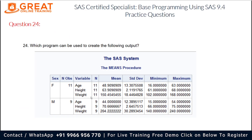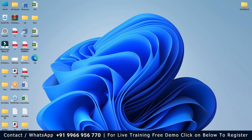The correct option is A, because we have not written the NOPRINT option. So by default we will get statistics like N, mean, standard deviation, minimum, and maximum. If we want other statistics like median, lower confidence limit, and upper confidence limit, we can get them by specifying them in the PROC MEANS step. For more clarification on the NOPRINT option, I will open SAS and explain.